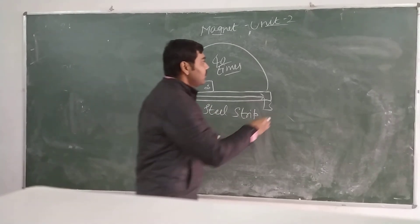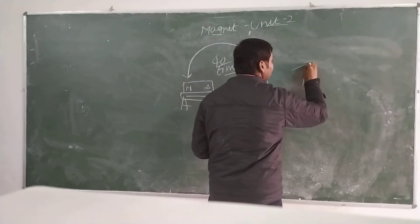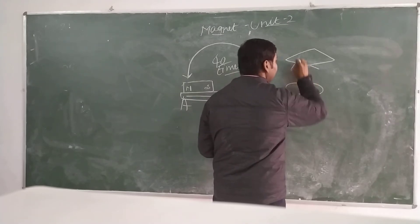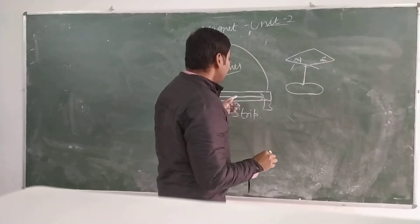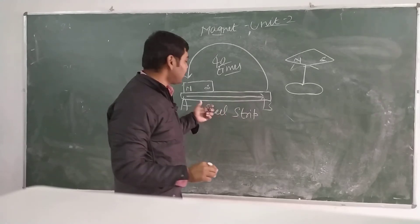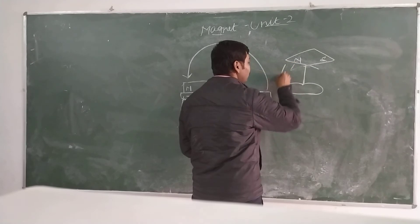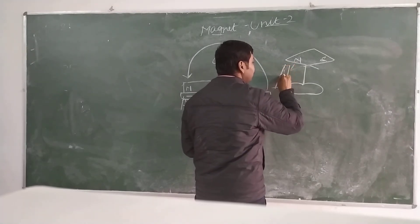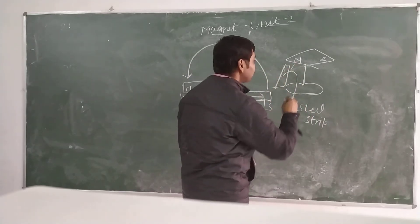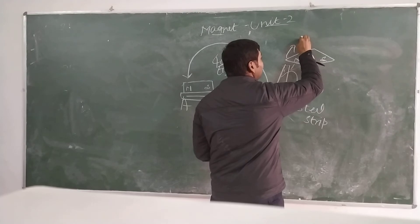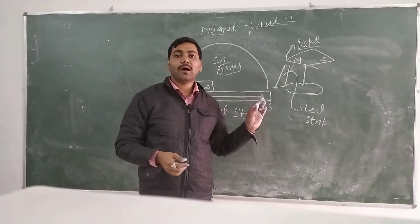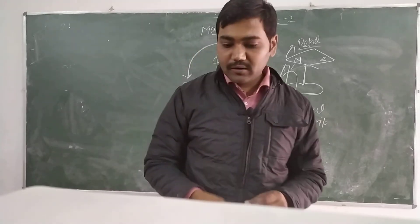To check if the steel strip has become magnetized, we bring a magnetic compass near it. After rubbing, we bring the steel strip close to the magnetic needle. We observe that the magnetic needle gets repelled. This proves that the steel strip has acquired magnetism.